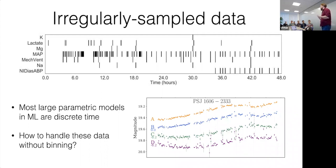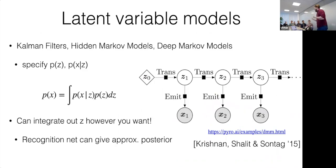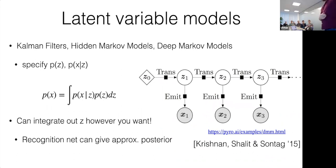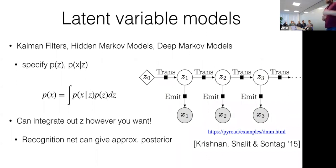Everyone here would say that's why you need a latent variable model — a generative model — such that there's some latent variable that updates according to well-defined transition dynamics. Being a generative model, if there happen to be any missing observations we get to marginalize them out for free. Of course then we have to do approximate inference.